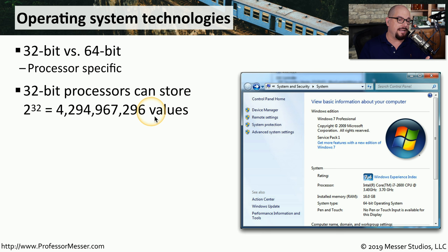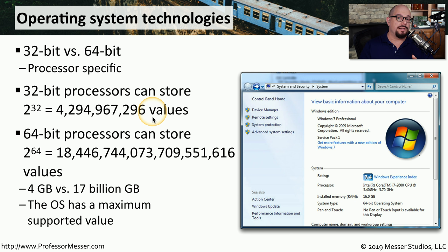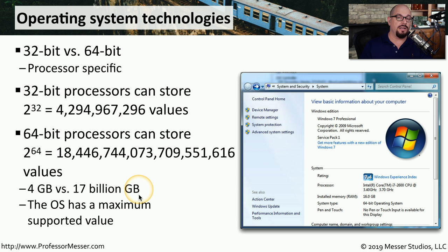A 64-bit processor can store information that is 2 to the 64th power, which is much larger than the 4 gigabyte value with a 32-bit operating system. In fact, in a 64-bit operating system, it's about 17 billion gigabytes of information that can be accessed. This means that theoretically, your operating system running on a 64-bit processor could allow you to install 17 billion gigabytes of memory. In reality, the operating system probably has a much smaller maximum value, although certainly much larger than the capabilities of a 32-bit operating system.